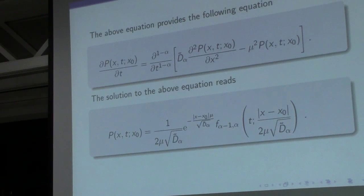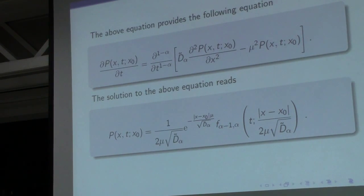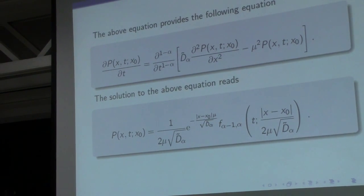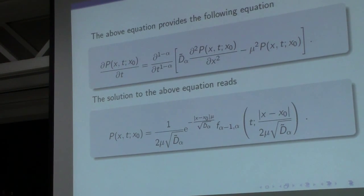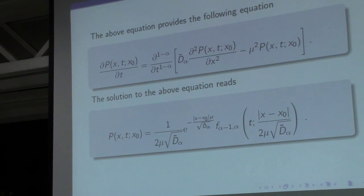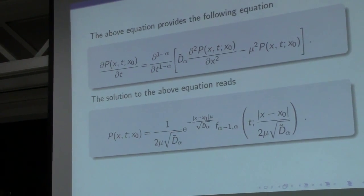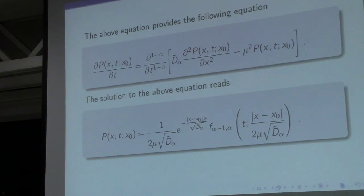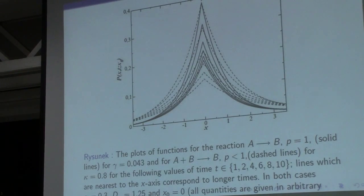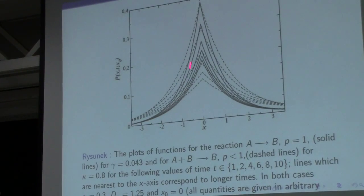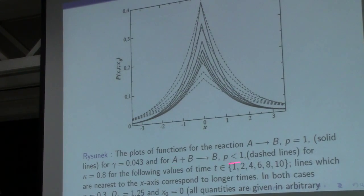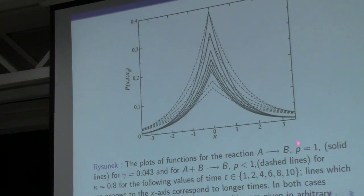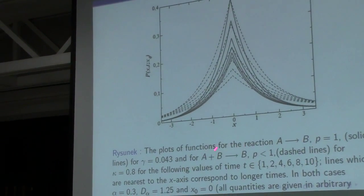It is interesting that both reactions can occur with the same probability and the same sub-diffusion constants, but the character of these reactions produces different solutions, different functions. The plots show the solutions: solid lines represent the function for the first reaction, dashed lines for the second reaction.